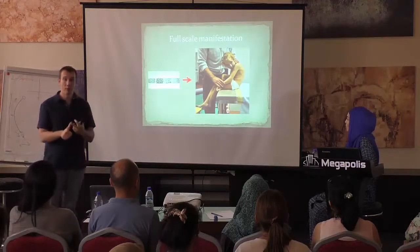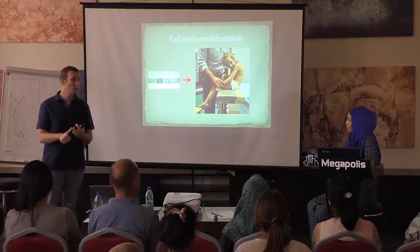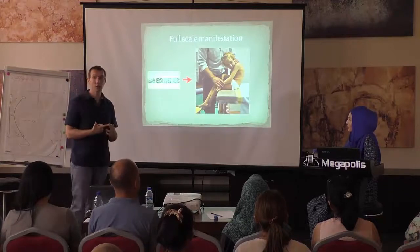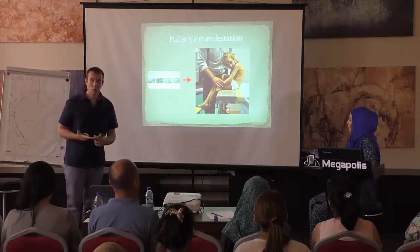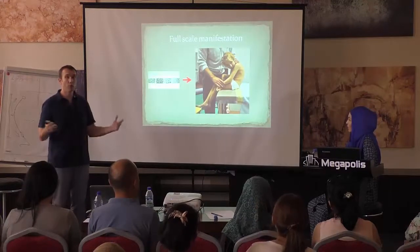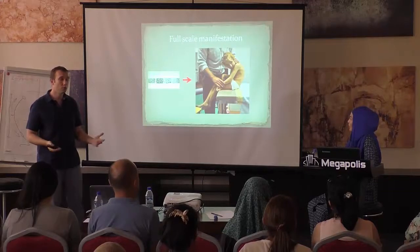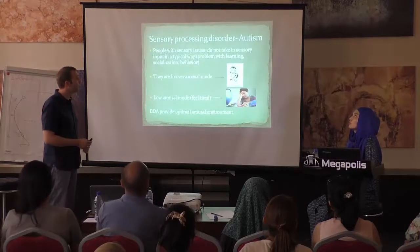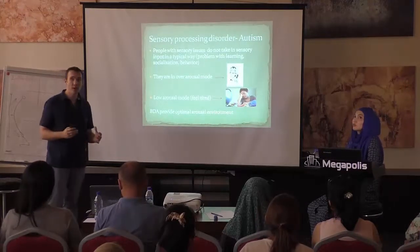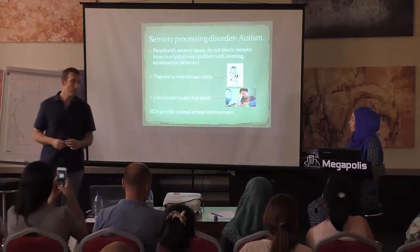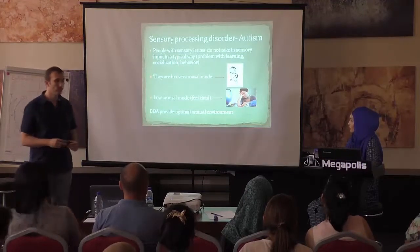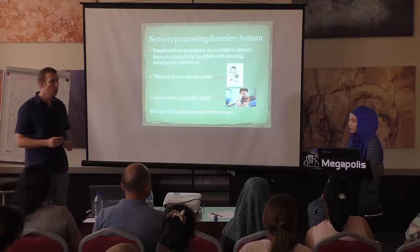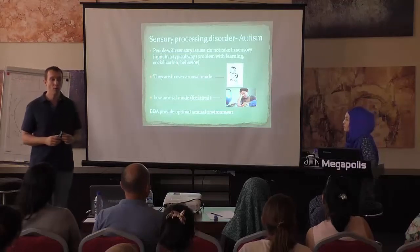The cells have problems with energy, differentiation, and growth. You can also see that the child doesn't grow and is not differentiating. Then we come to the part of the fascia as a sensory organ. The fascia is the most sensitive organ in our body.